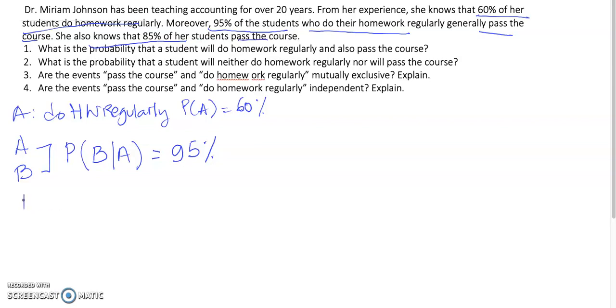she also knows that 85% pass the course. So, B, we have defined here, pass the course is 85%. I mean, this is P(B).